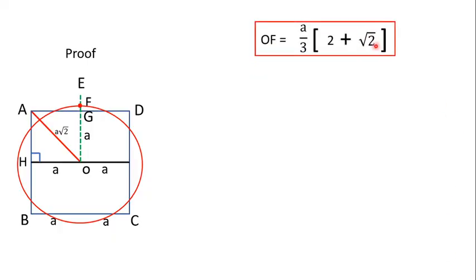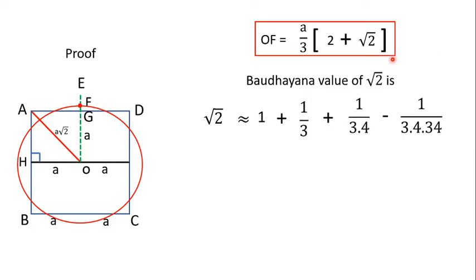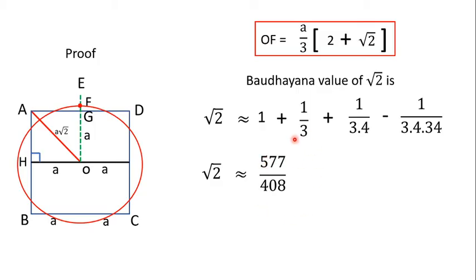Baudhayana himself gave a series for the value of √2. He says √2 is approximately equal to 1 + 1/3 + 1/(3×4) − 1/(3×4×34). This is correct to five decimal places. On simplification this gives 577/408, which is approximately 1.4142156.